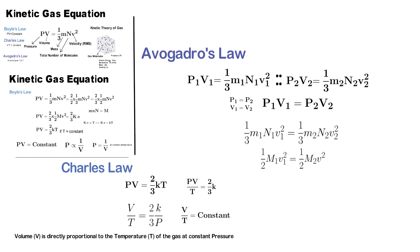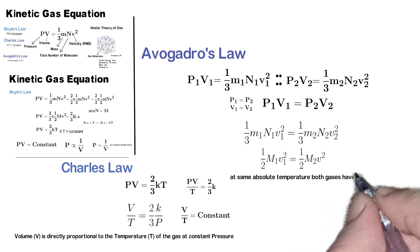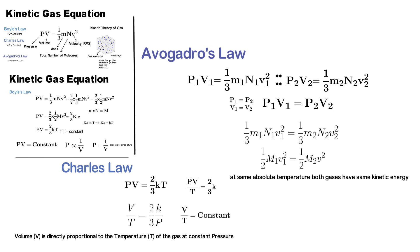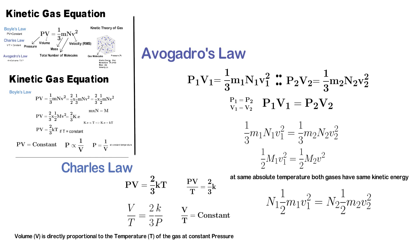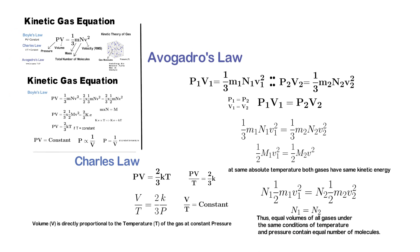Writing these in kinetic energy form, we have 1/2 M1V1² = 1/2 M2V2². Now, one of the postulates of the kinetic theory of gas is that the average kinetic energy of a gas is equal to its absolute temperature. So if the temperature of both gases is the same, the kinetic energy of the molecules of gas 1 equals the kinetic energy of molecules of gas 2, giving 1/2 M1V1² = 1/2 M2V2². From the above equations, if the masses are equal, then N1 = N2. This means equal volumes of all gases under the same conditions of temperature and pressure contain equal numbers of molecules. That is Avogadro's law.